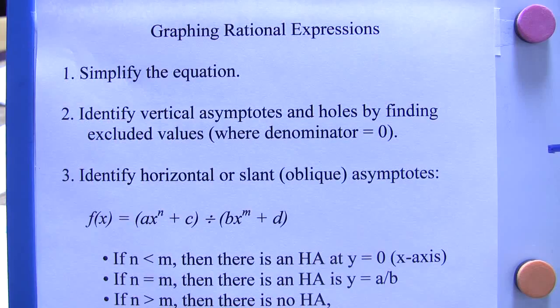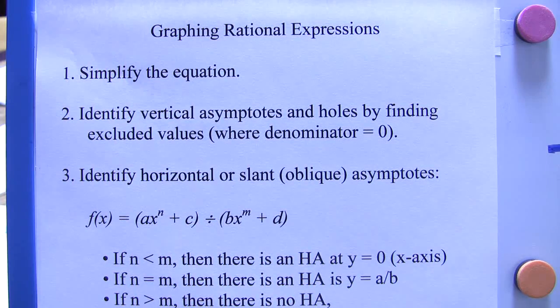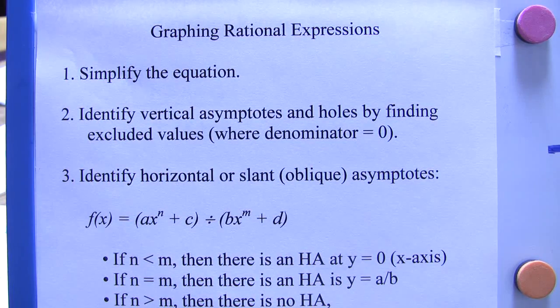The first, you must simplify the equation. That means you need to factor it and reduce. The second is you need to identify vertical asymptotes and holes by finding the excluded values. And that's where the denominator equals zero.